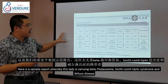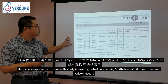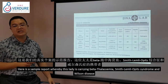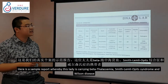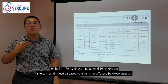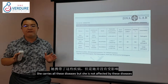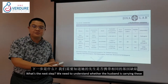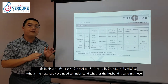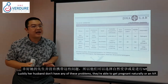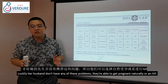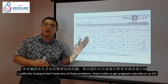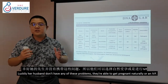Here is a sample report: a female partner was found to be carrying beta thalassemia, Smith-Lemli-Opitz, and Wilson's disease — but since she is only a carrier, she is not affected. The next step was to check whether her husband also carried these diseases. Fortunately he did not, so she is free to choose between IVF or natural pregnancy.